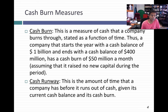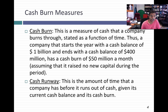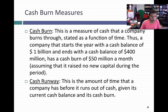The other way people measure the extent of cash burn is called the cash runway. Your cash burn is about $50 million a month and you've got $400 million left as a cash balance — you've got about eight months of cash before you run out. That's called the cash runway. The longer your cash runway, the more time you have before you run out of cash, and the safer you are as a company because you don't have to go to capital markets.